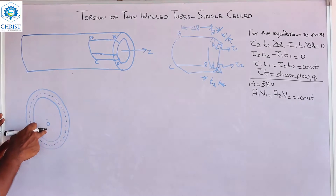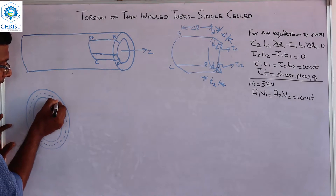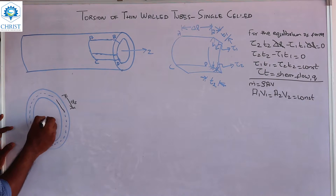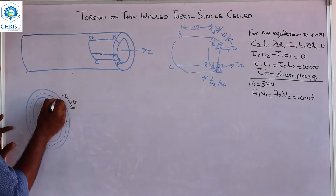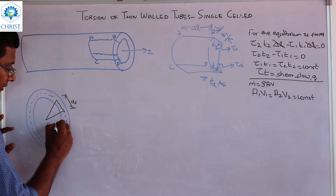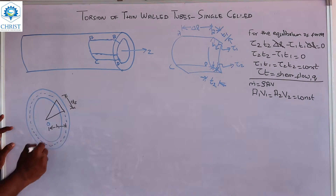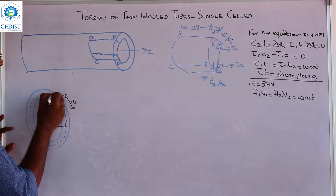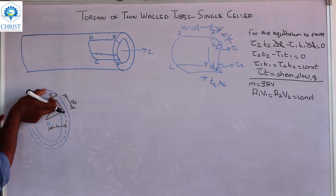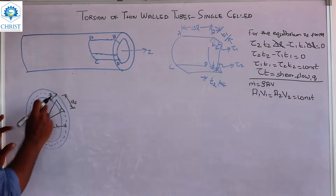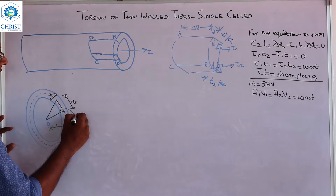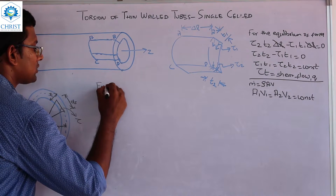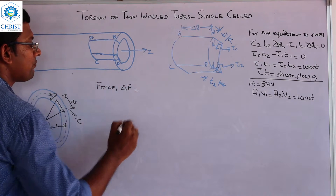First, it is the center part. It will be a different element — it will be the dimension Ds. I am connecting that part with the center O. This perpendicular distance will be H. This will be the right angle. This is the thickness T, which is smaller — that is because it is a small element of variation. T is the thickness, and this is the stress.